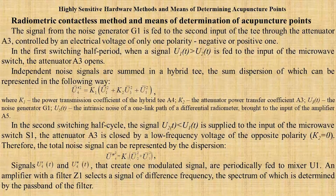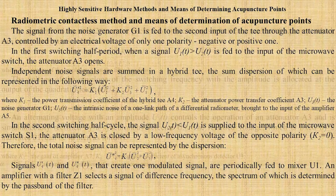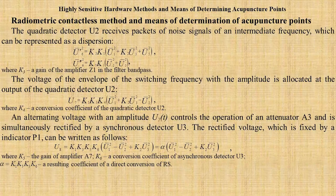The signal from the noise generator G1 is fed to the second input of the T-junction through the attenuator A3, controlled by electrical voltage of only one polarity — negative or positive. Slide 11.